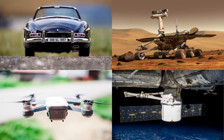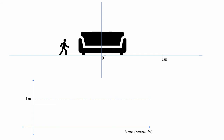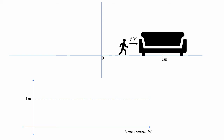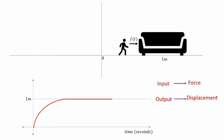Consider an example where a person wants to move the position of a chair from one point to another. He will have to apply a force onto the chair so as to move it. By applying the necessary force, he will be able to move the chair to the desired position. The variation of the position with respect to time can be plotted as shown.